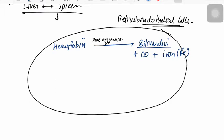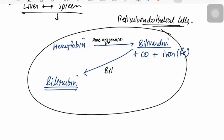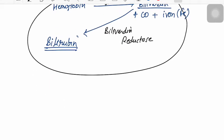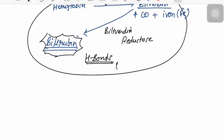This product is then converted into bilirubin using the enzyme bilirubin reductase. However, this bilirubin has strong internal hydrogen bonds, making it non-soluble in water. To be water-soluble, these hydrogen bonds must be broken down, but since they are powerful, bilirubin remains water-insoluble at this stage.